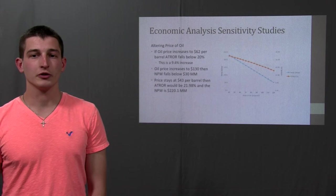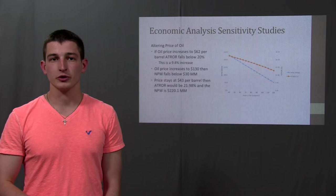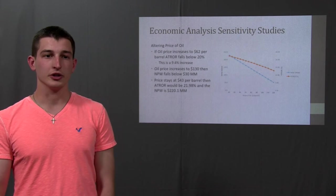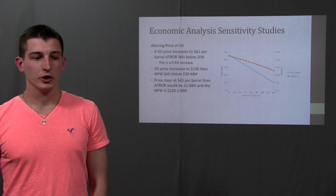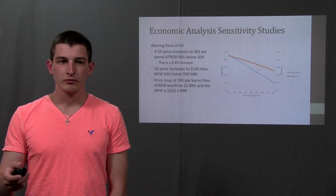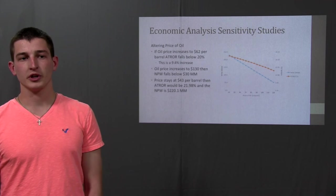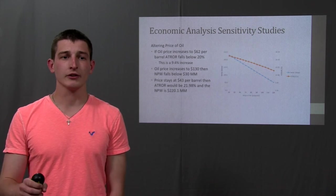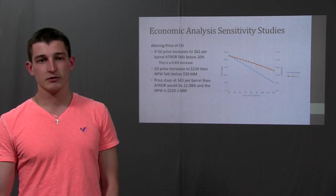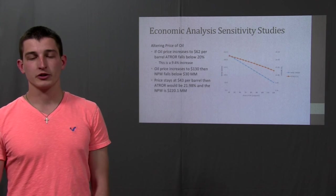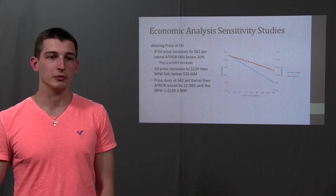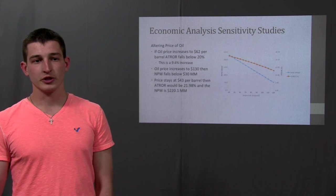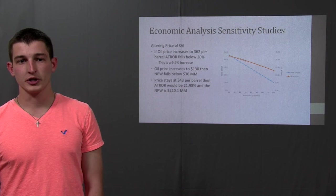Again, we altered the price of oil and in this sensitivity study, everything was based on the price of oil. So the incoming feed prices and the product prices were all based off of the price of oil based on correlations that were done and also the utilities. So currently, the price of oil was assumed to be around $55 per barrel. And so if oil increased to 62, this would cause the ATRO to drop below the 20%. That is a 9.4% increase in the price of oil that we used for our sensitivity study. If it increased to 130 million, which is a lot higher than it's ever been in the past 20 years, then our net present worth would fall below 30 million. So that just kind of shows that the net present worth, if everything is based off of the price of oil, will always be positive. And currently, the price of oil in 2016 was based off of $43 per barrel. And so this shows an ATRO of roughly 22% and a net present worth of 220 million, which again would allow the project to go forward.